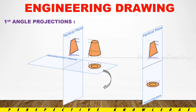In 1st angle projections, we use horizontal and vertical axes — the y-axis — forming 4 columns, that is 4 quadrants: 1st quadrant, 2nd quadrant, 3rd quadrant, and 4th quadrant.